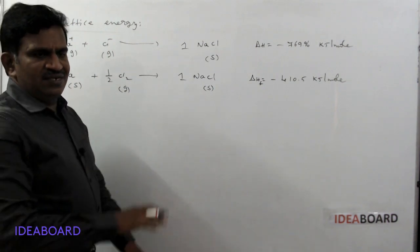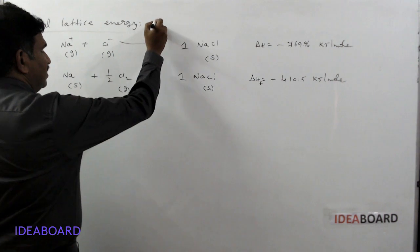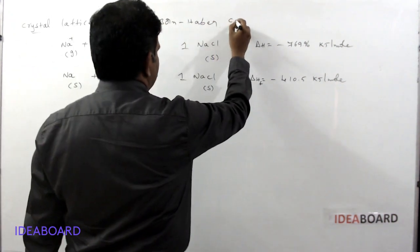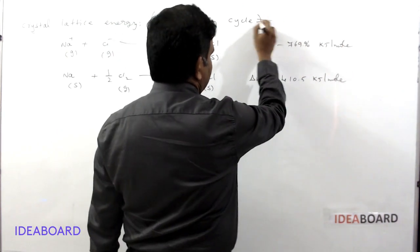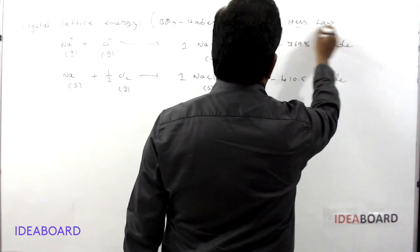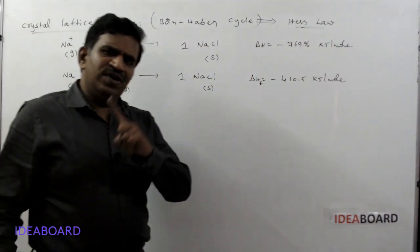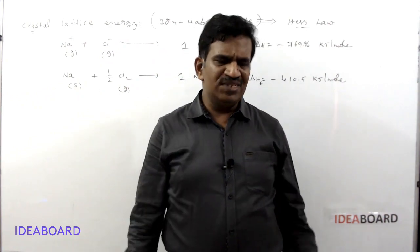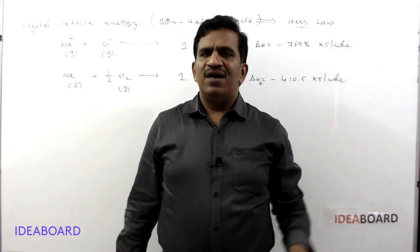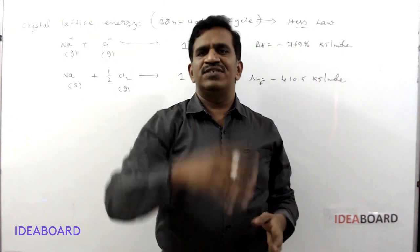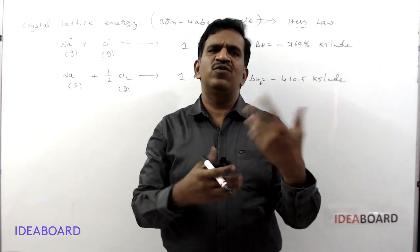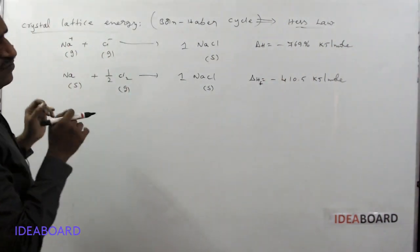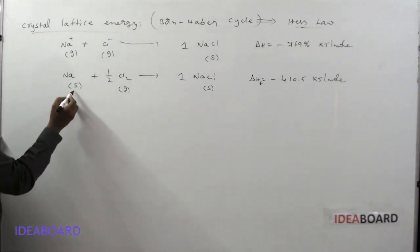Since direct calculation is not possible, we use an indirect method based on the Born-Haber cycle. The Born-Haber cycle works based on Hess's law. According to Hess's law, whether a reaction is carried out in one step or in multiple steps, the energy released or absorbed is the same — just like reaching home by a direct route or by different routes, you arrive at the same place.